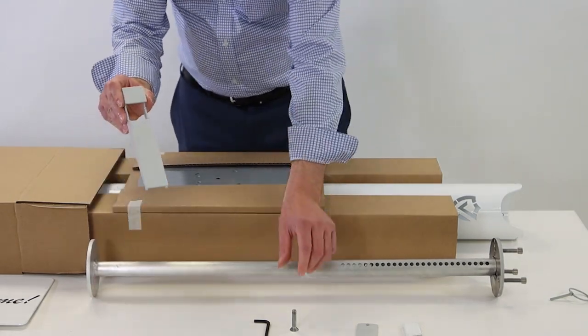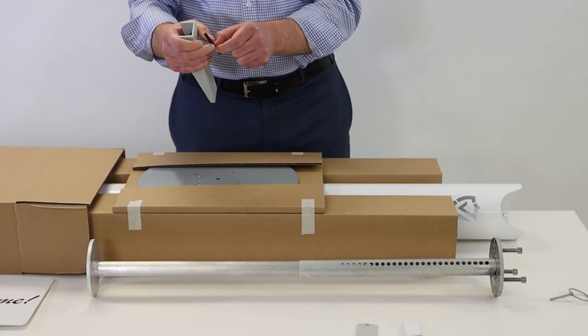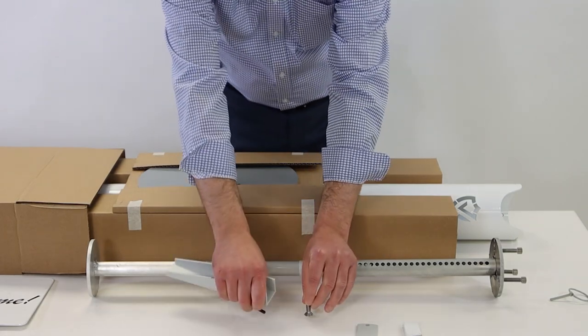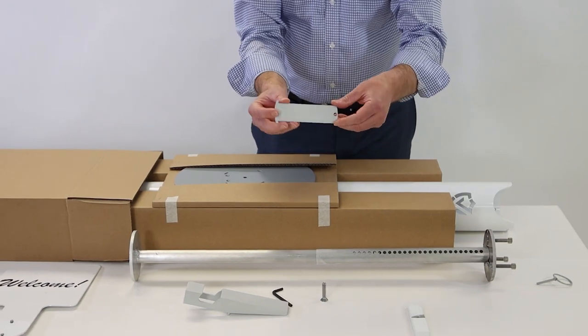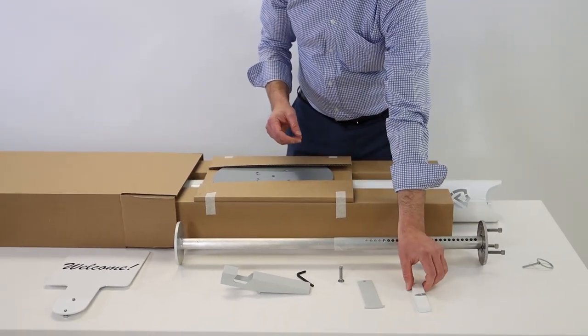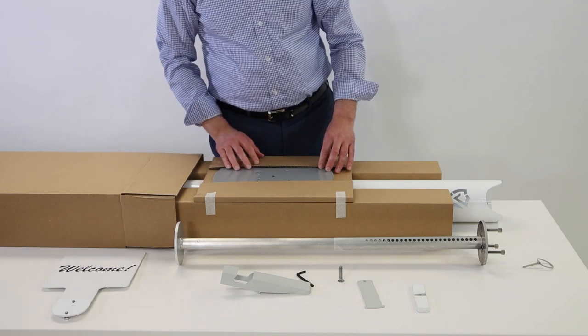This is the foot pedal which gets attached to the base plate using the allen key and this bolt. This is called the top plate and this is called the cross beam. And this here is our optional sign plate.